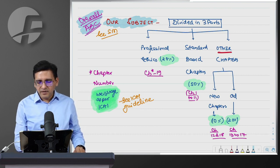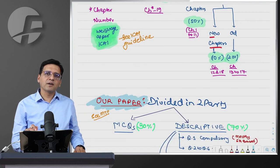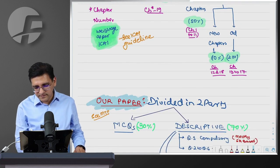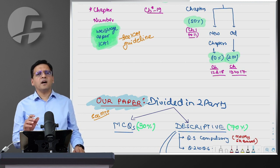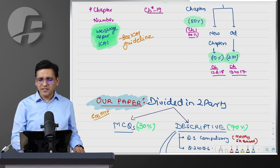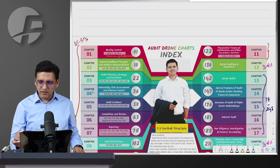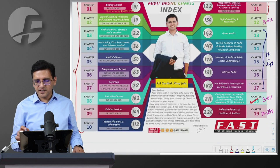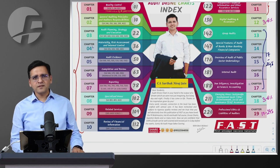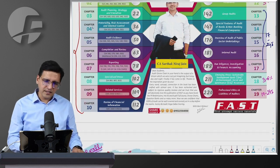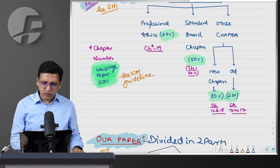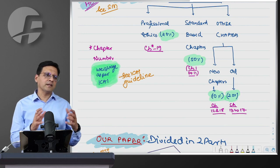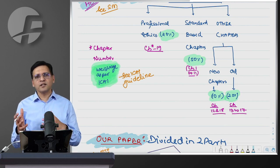The two new chapters - digital auditing and ESG/SDG - each have approximately 5% weightage from the institute. So digital audit: 3-6%, and SDG/ESG: 3-6%. Somewhere around 8-10 marks total from both. One question each may come - maybe one of 5 marks and one of 4 marks, or both of 5 marks.